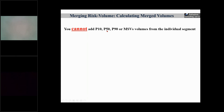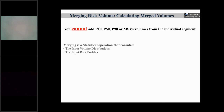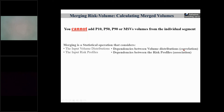First of all, what you cannot do: you cannot add the P10, P50, P90, or mean volumes from the individual segments. Unfortunately, I often see people do that, but it is mathematically incorrect and you really come to the wrong conclusion. Please never add P10, P50, P90s, or mean volumes. Merging is a statistical operation that considers the input volume distributions and input risk profiles. The dependencies become very important — dependency between volume distributions is called correlation, and dependency between risk profiles is called association.